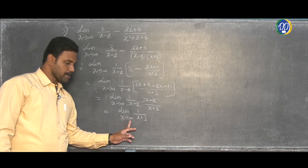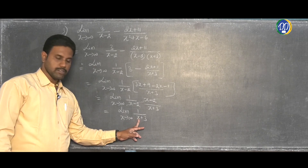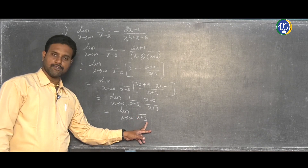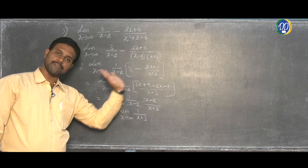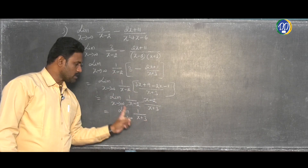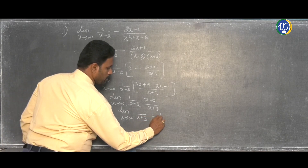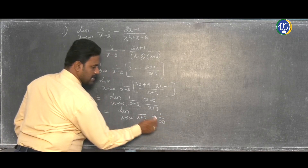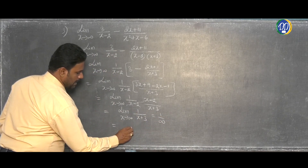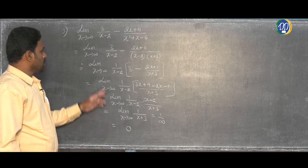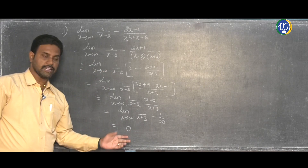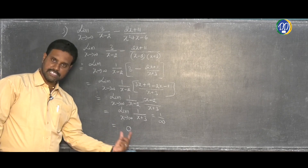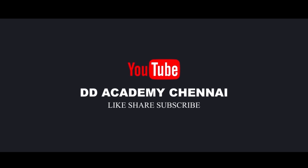Now what do we do? We substitute x tends to infinity. When x goes to infinity, the total value we put in is 1 by infinity, which equals 0. The value is 0. Then at limit x tends to infinity, the function tends to 0. This is the final answer — the answer is 0. Thank you.